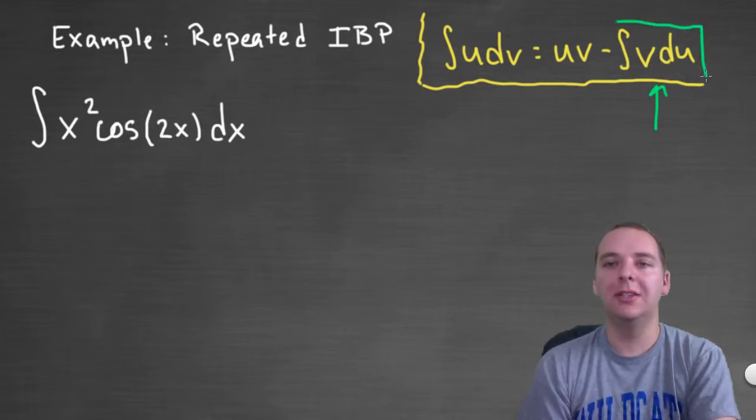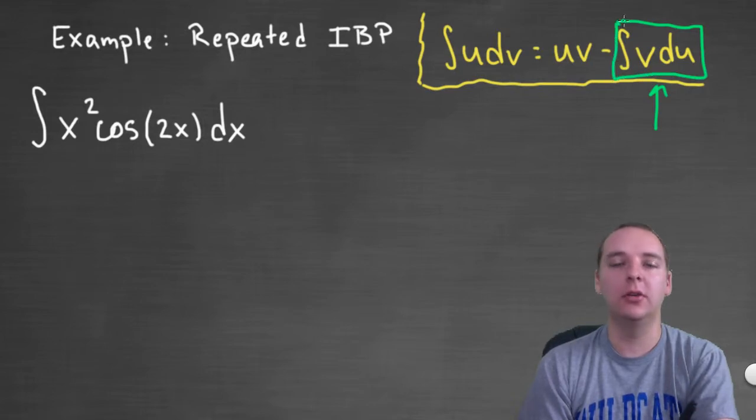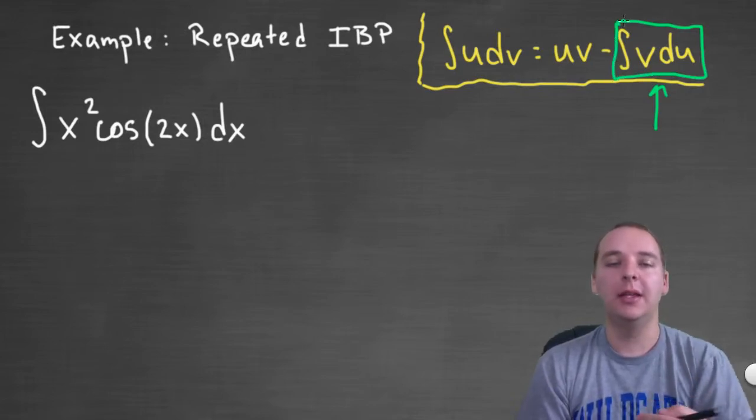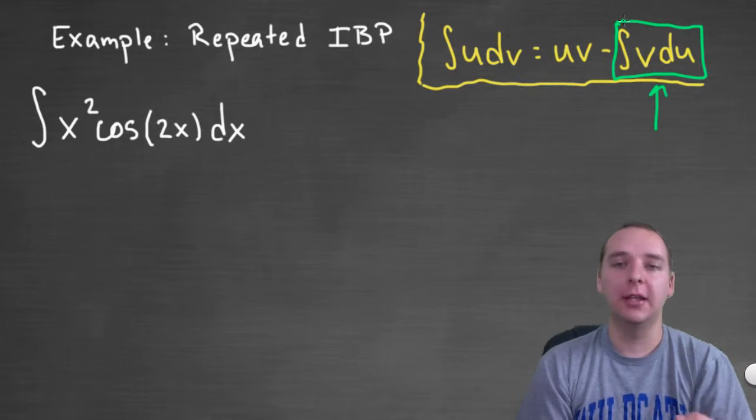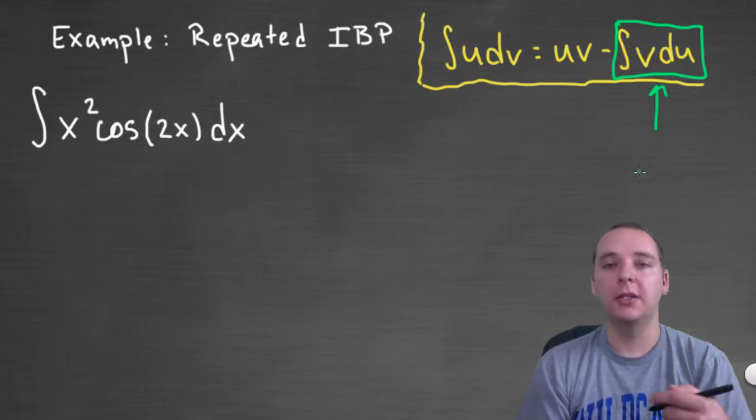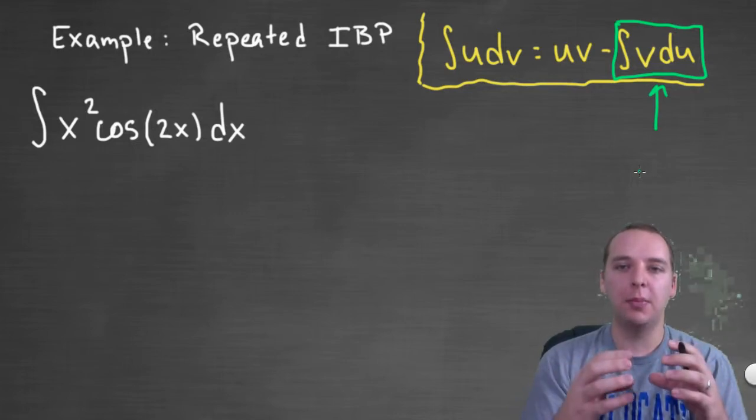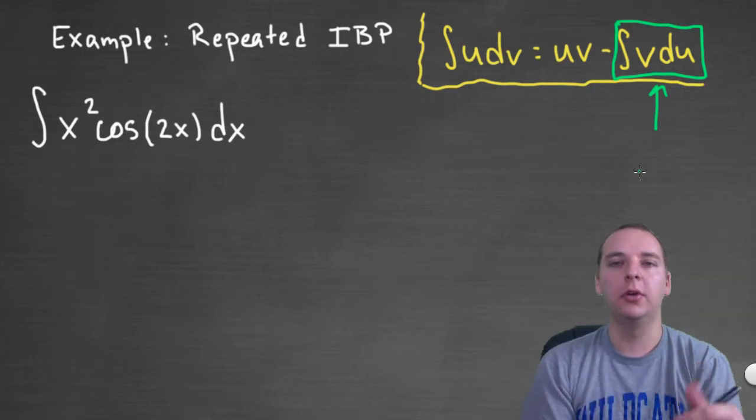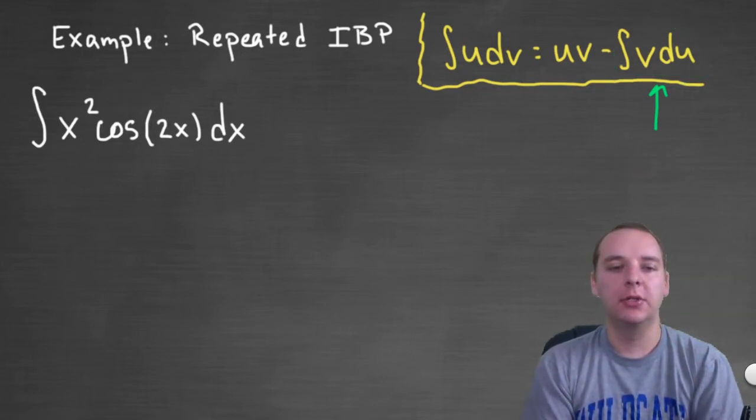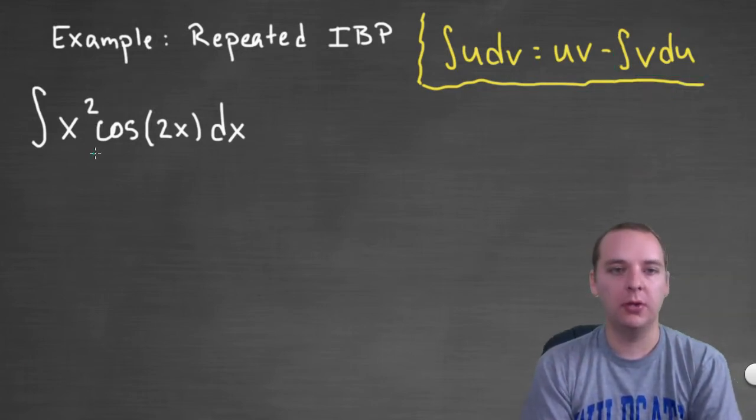However, if this integral here is still relatively ugly or still has a product or something like that, you might need integration by parts a second time for him, or possibly a third time for the next one, and you wind up getting these nested integration by parts that you need over and over again. So let me just show you how that's going to look when we do an example.